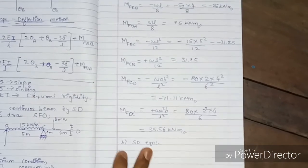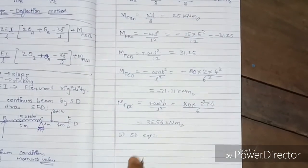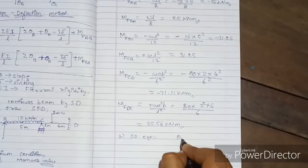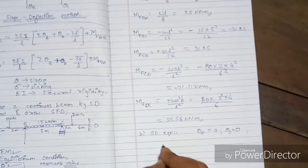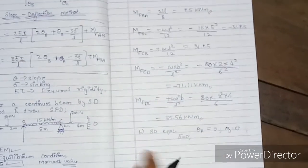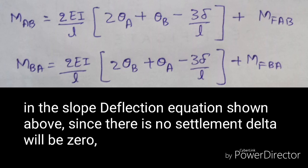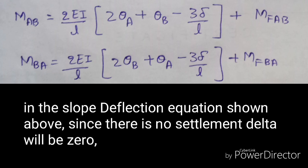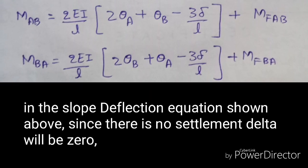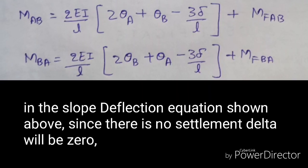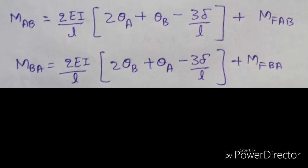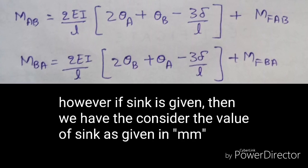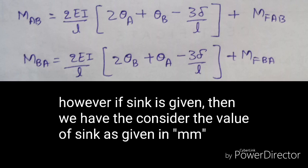To use the slope deflection equation, remember that at fixed ends the rotation is zero. The fixed ends here are A and D, so θ_A = 0 and θ_D = 0. Also, there is no settlement, so Δ = 0, and we neglect the term 3Δ/L. Our slope deflection equation simplifies to: M = (2EI/L)(2θ_near + θ_far) + MF.